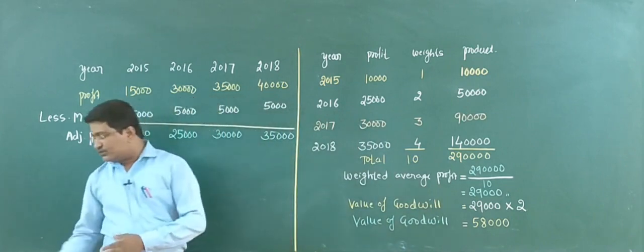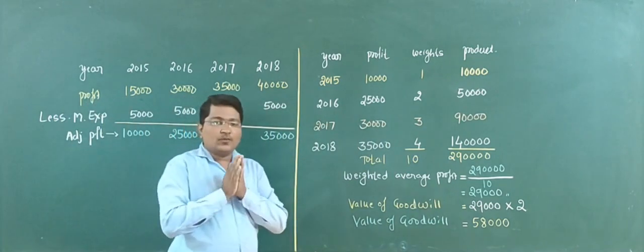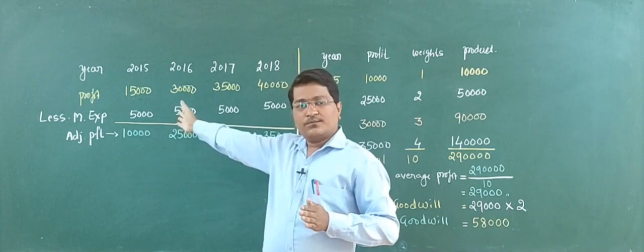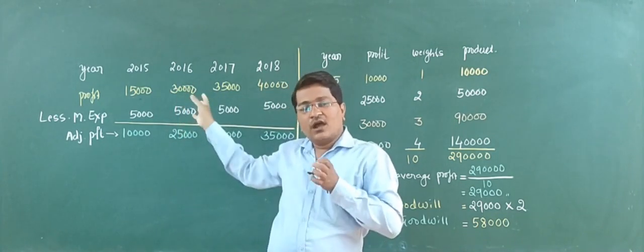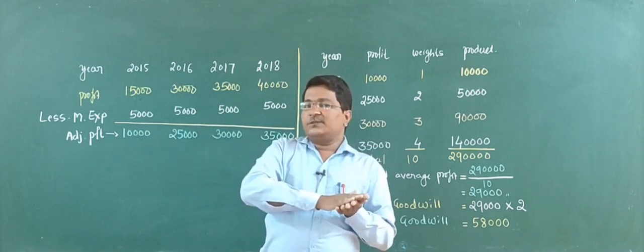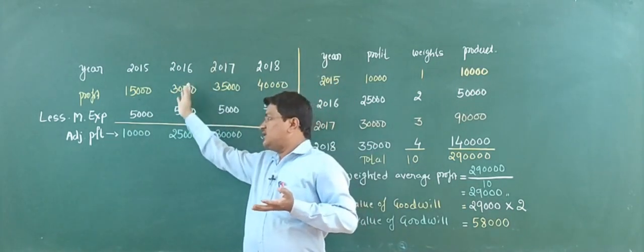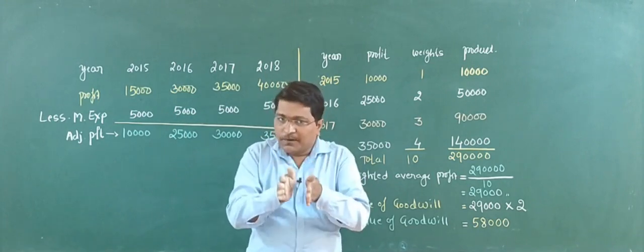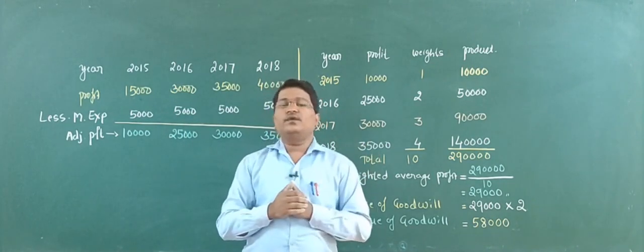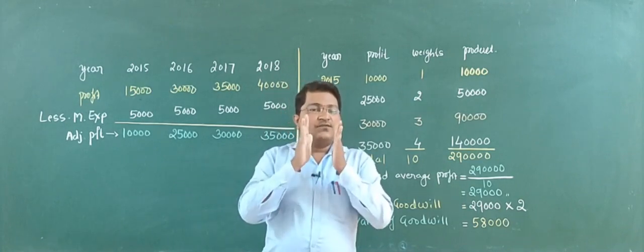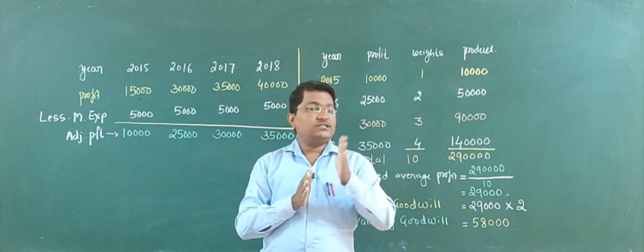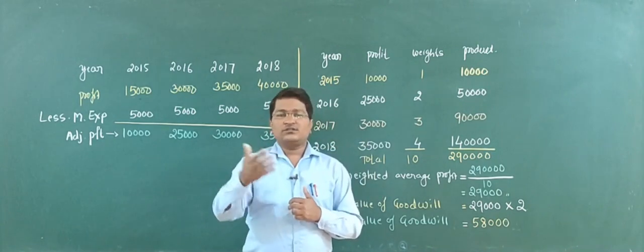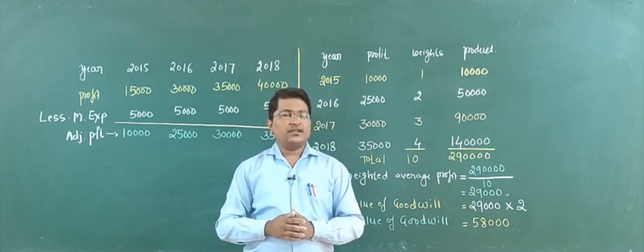So, now you understand how to find the value of goodwill when adjustments are given. First, we adjust the profit using all given adjustments to find the adjusted profit. Then, with the help of adjusted profit, we calculate goodwill of the firm. In the next class, we will move with similar problems with 2 or 3 adjustments.